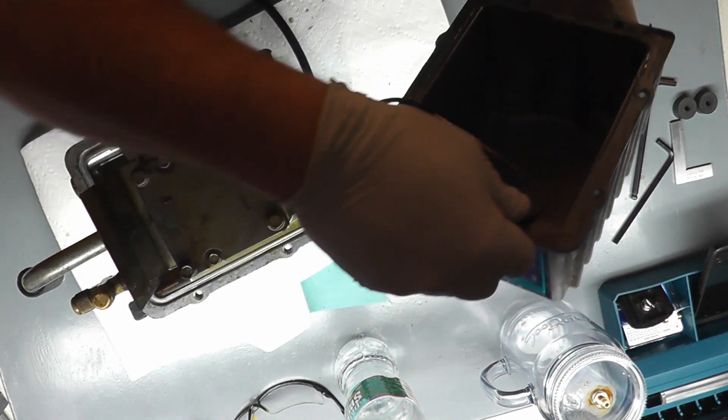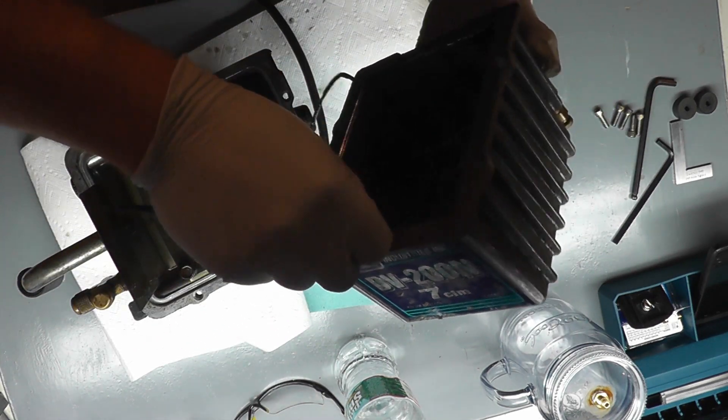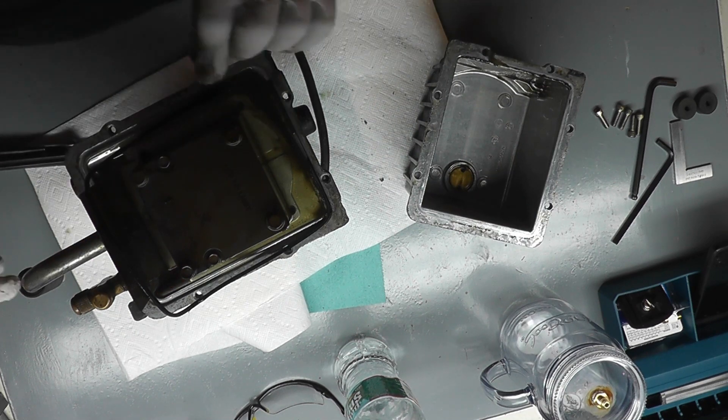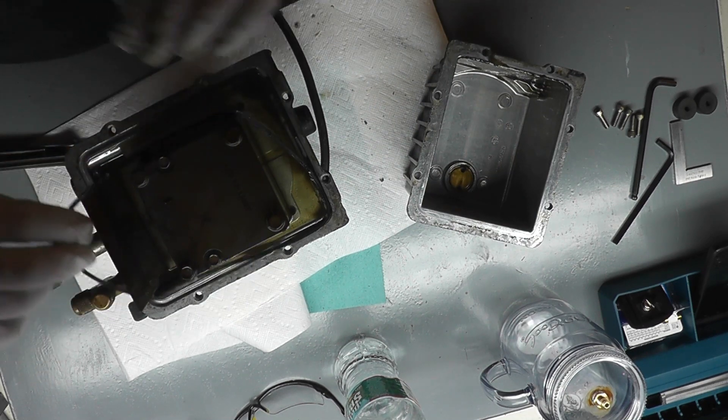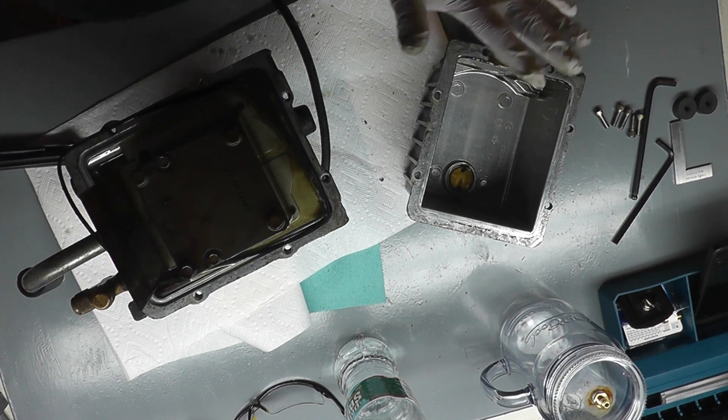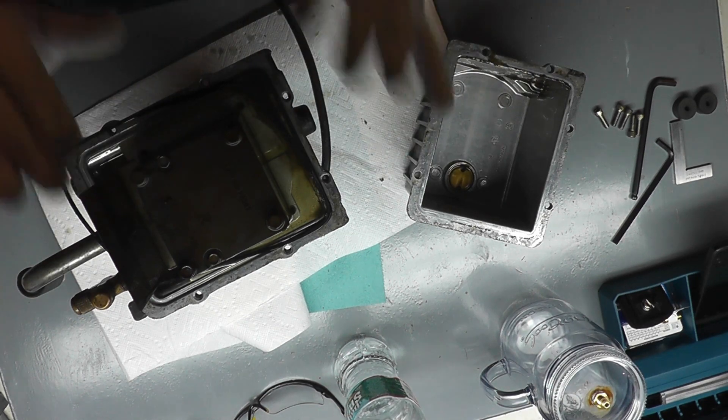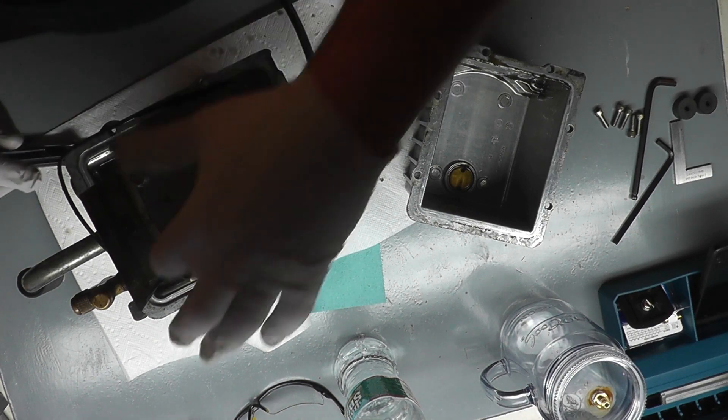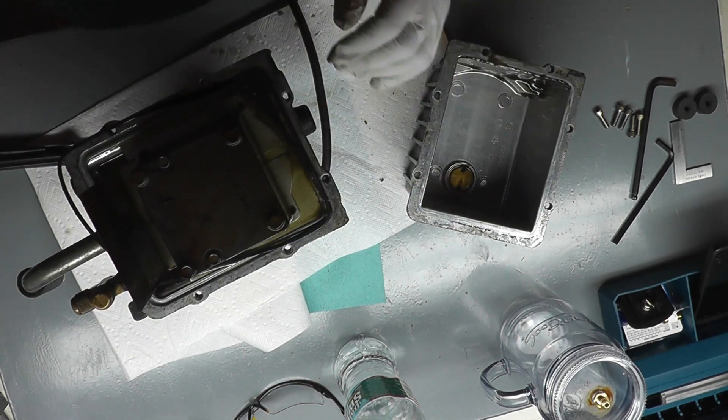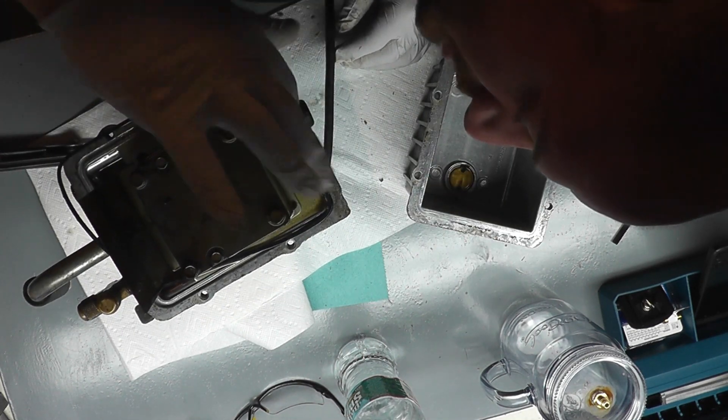All right, now this should pop right off and it does. So we have a little rubber gasket here. It's perfectly fine. Now I'm not going to take this all apart because it's working fine, so I'm not going to mess with the valve plate or anything. But you can kind of see up here is the little reed valves and all this basically swims in oil.